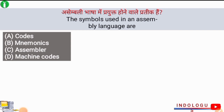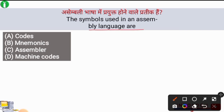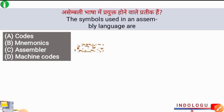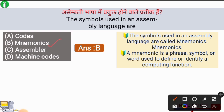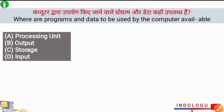Next question: The symbols used in assembly language are called what? The right answer is option B, mnemonics. The symbols used in an assembly language are called mnemonics. A mnemonic is a phrase, symbol, or word which is used to define or identify a computing function.